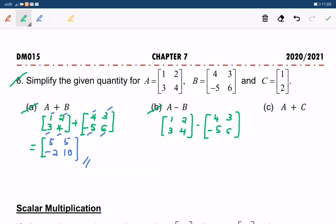And it is equal to: 1 minus 4, which equals negative 3; 2 minus 3 equals negative 1; 3 minus negative 5 is 8; and 4 minus 6 is negative 2. So, this is the answer for A minus B.